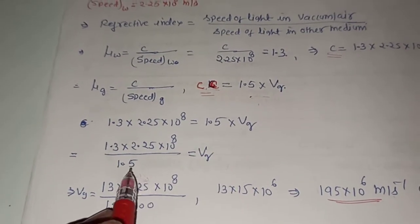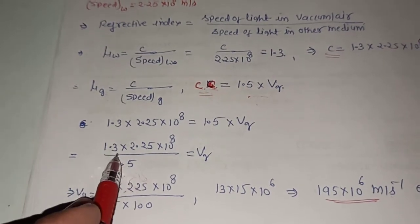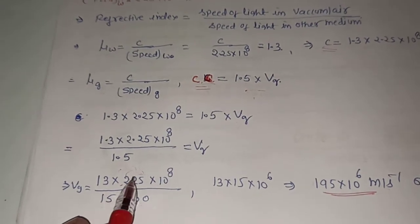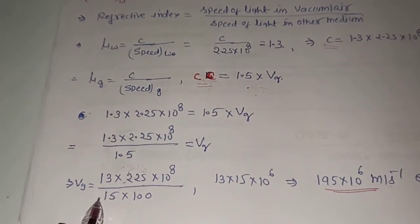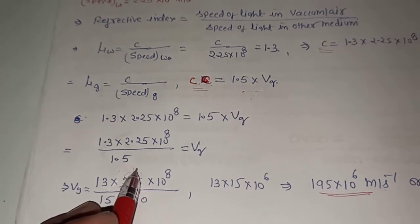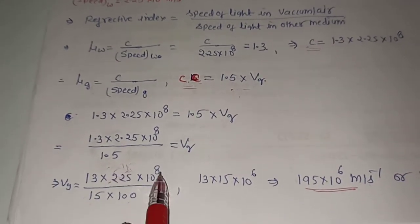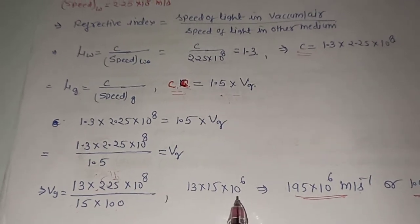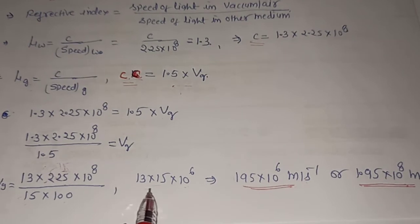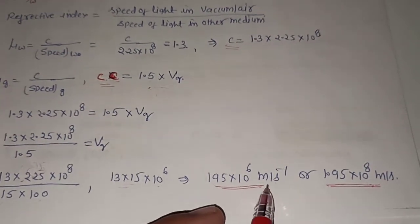1.5 comes to the denominator. The decimals cancel — we convert 2.25 as 225/100, and 225 is the square of 15, so 225 divided by 15 gives 15. We then have 1.3 × 15 / 100 × 10⁸, which simplifies: 10⁸ divided adjusts to 10⁶, giving 195 × 10⁶ m/s.